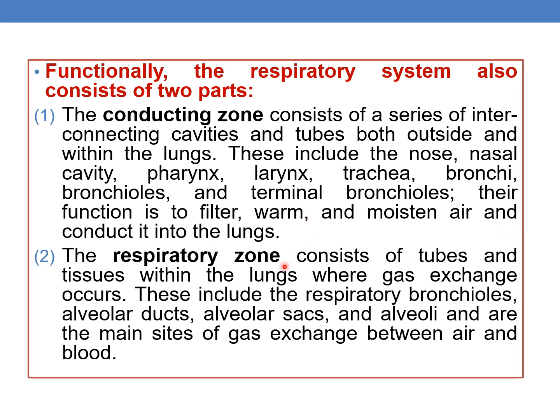The respiratory zone consists of tubes and tissues within the lungs where gas exchange occurs. These include the respiratory bronchioles, alveolar ducts, alveolar sacs, and alveoli, and they are the main sites of gas exchange between the air and the blood.